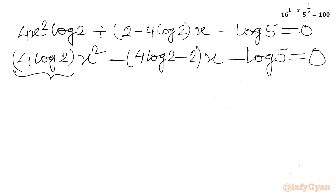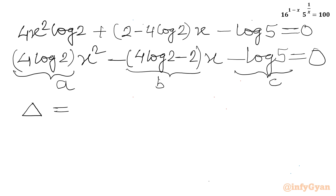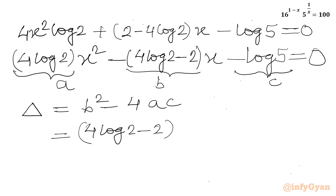This is a quadratic equation in x where the coefficient of x squared is 4 log 2, that is a. The coefficient of x is minus(4 log 2 minus 2), that is b. And c is minus log 5. Now let us check the discriminant: it is b squared minus 4ac. Here a is 4 log 2 and c is minus log 5, so we write plus log 5.